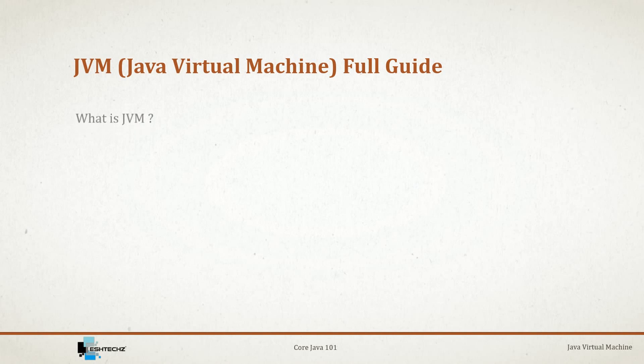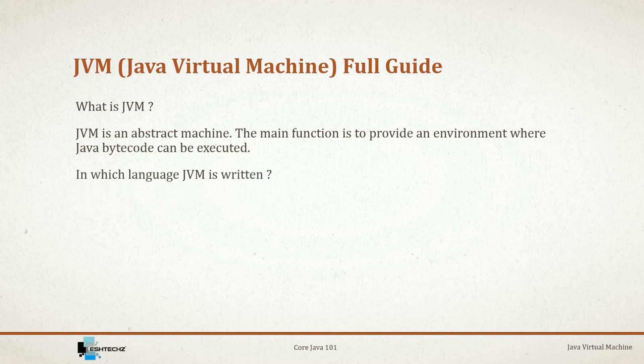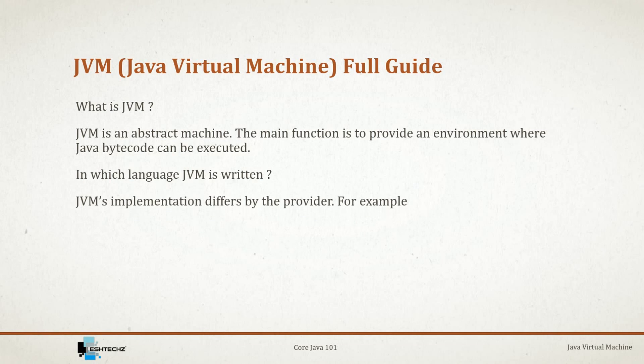The very first question that comes to mind is: what is JVM? JVM is an abstract machine whose main function is to provide an environment where Java bytecode can be executed. Now this virtual machine has to be written in some language — so in which language is JVM written? JVM's implementation differs by the provider.